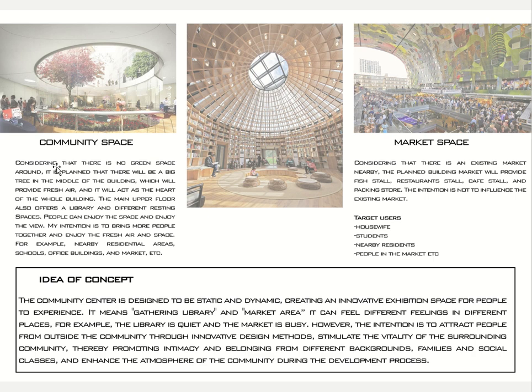For the community space, considering that there is no green space available there, I plan to have a big tree in the middle of the building, which will provide fresh air and serve as the heart of the whole building. The space will also offer a library and different resting areas. People can enjoy the space and the view. My intention is to bring more people together to enjoy fresh air and space — from nearby residential buildings, schools, office buildings, and the market.